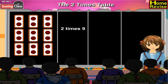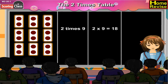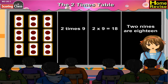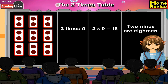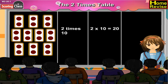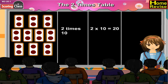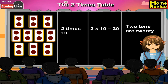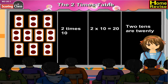2 times 9, that is 2 multiplied by 9, is equal to 18. We call it as 2 nines are 18. 2 times 10, that is 2 multiplied by 10, is equal to 20, and we call it as 2 tens are 20.